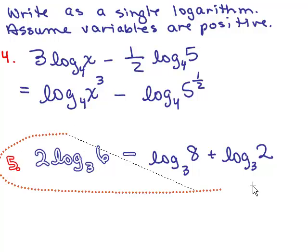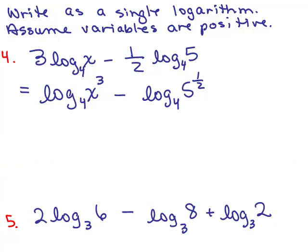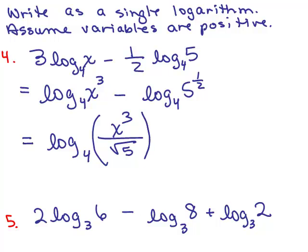So, let's see, move this down a little. All right, now I have a subtraction of logs, so you can write that as a quotient. So I've got the log base 4, the numerator will be x cubed, and the denominator will be 5 to the 1 half or square root of 5. You can leave the answer like that, or if you want, you could put parentheses around it, so it doesn't get confused with this base of 4.